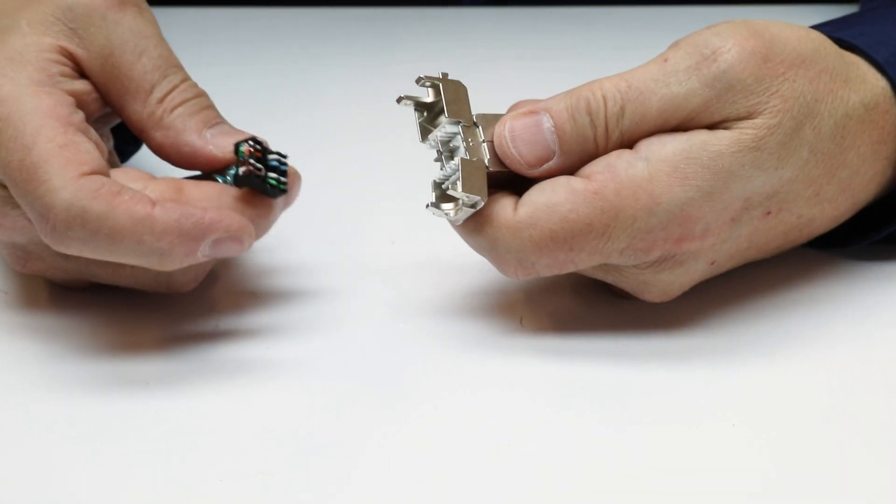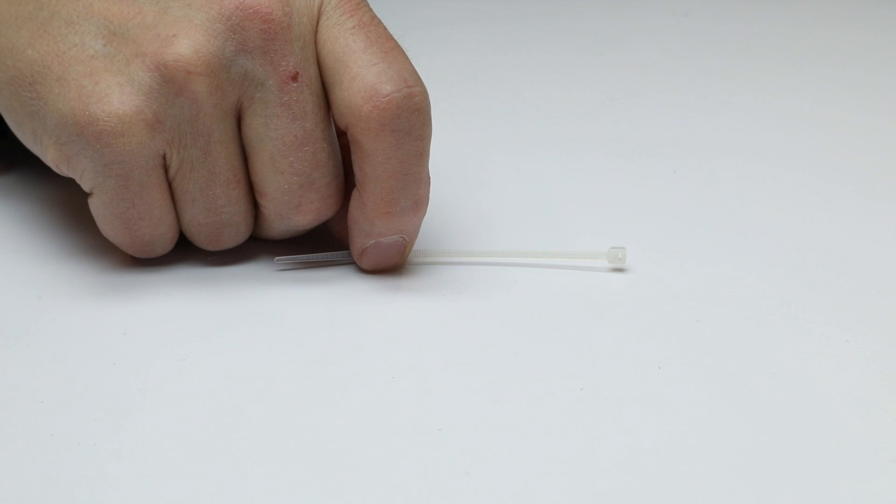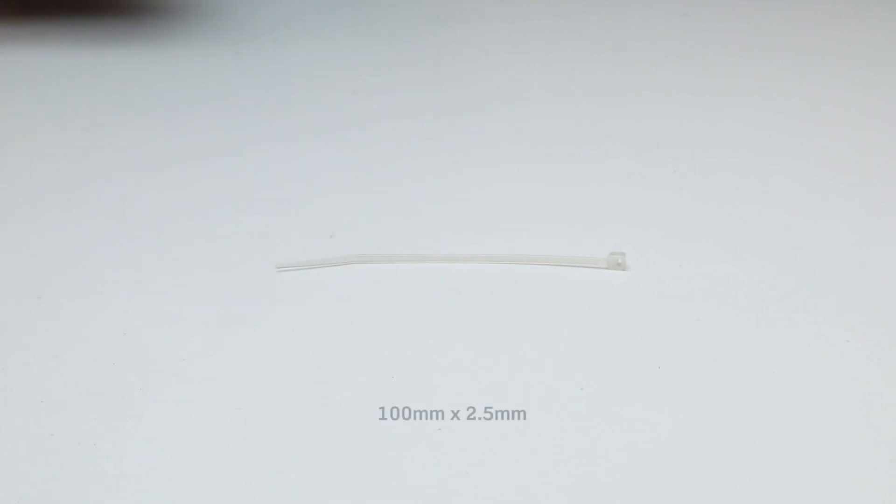A user provided cable tie may be used when re-terminating the VXC coupler. The proper cable tie size is 100 millimeters by 2.5 millimeters.